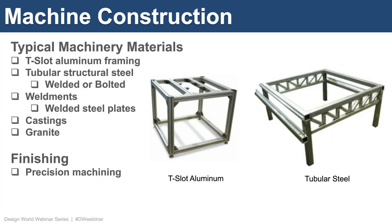Machines are often constructed from a variety of base materials. T-slot aluminum framing is common. Tubular structural steel that's welded or bolted together is also a popular choice. Machines can be made from weldments — essentially steel plates welded together into a variety of shapes. Other machines can be made from castings. Granite is also used for machine bases for high-precision applications such as CMM, or coordinate measuring machines. In many cases, finishing operations such as precision machining are required to increase the accuracy of the machine.